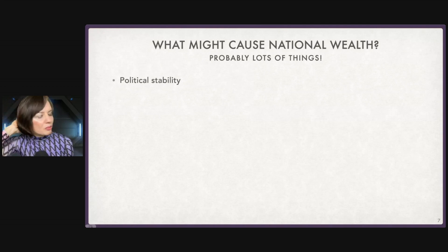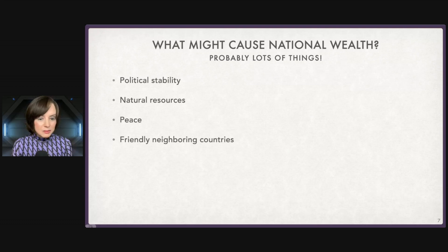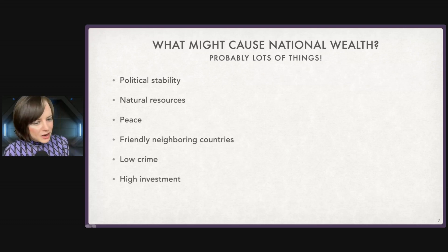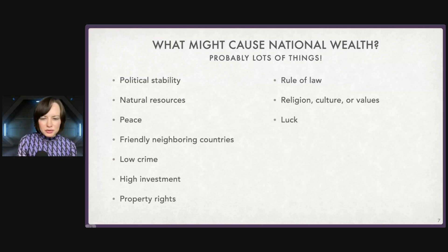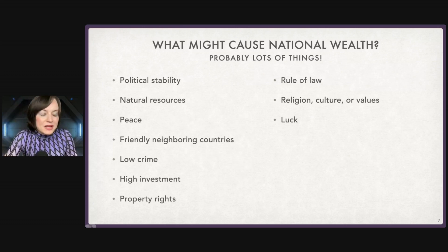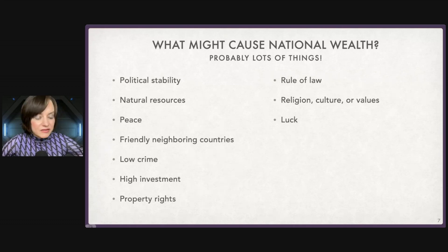Suppose we use GDP anyway. Now we want to know what is going to cause GDP to go up. Maybe countries that are more politically stable have more wealth. Maybe it's natural resources, or being peaceful, or having friendly neighbors, or domestic crime rates, investment, property rights, rule of law, religion or cultural factors. Or maybe it's just luck — some countries got on the path towards wealth and some didn't. All of these are areas that have been researched quite a bit, posited and evaluated as possible drivers of national wealth by various thoughtful people.